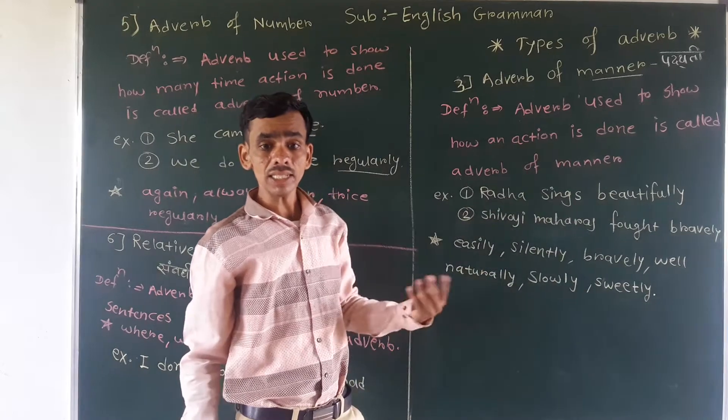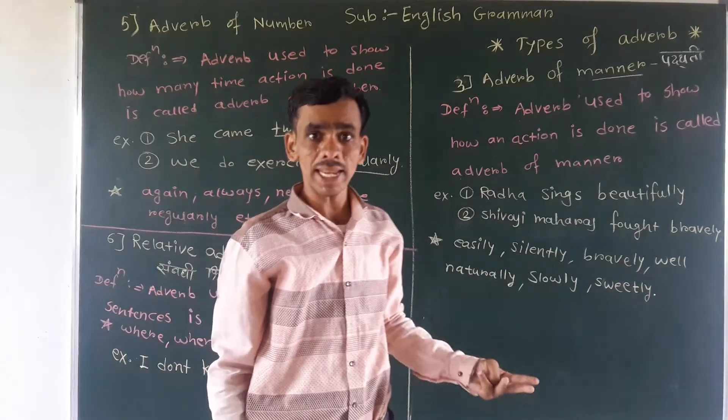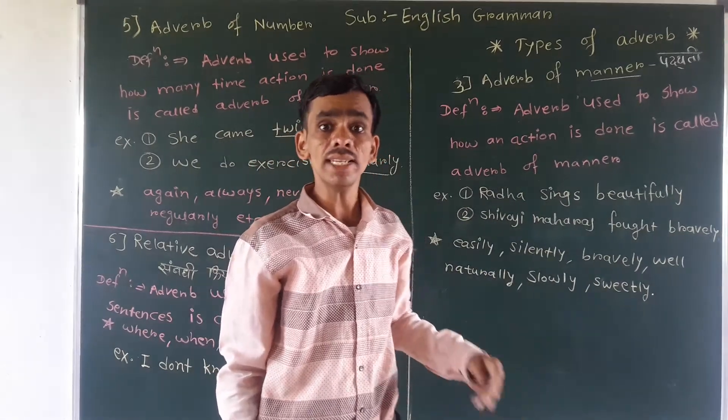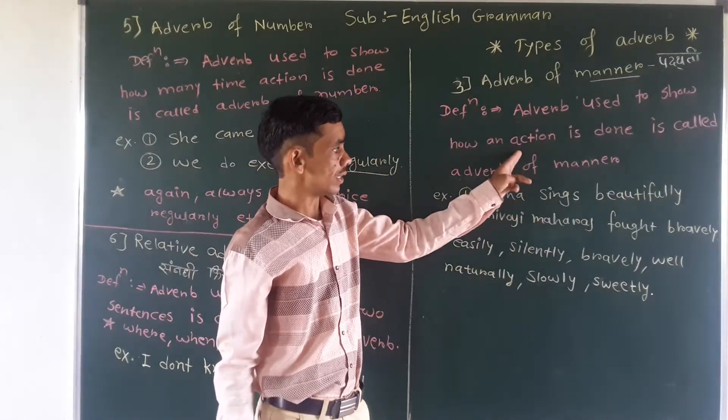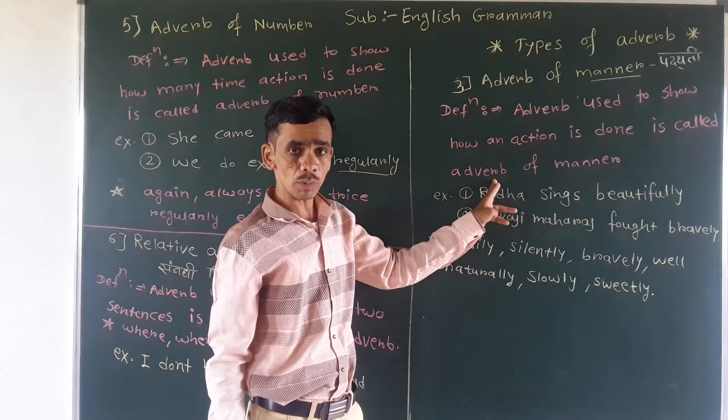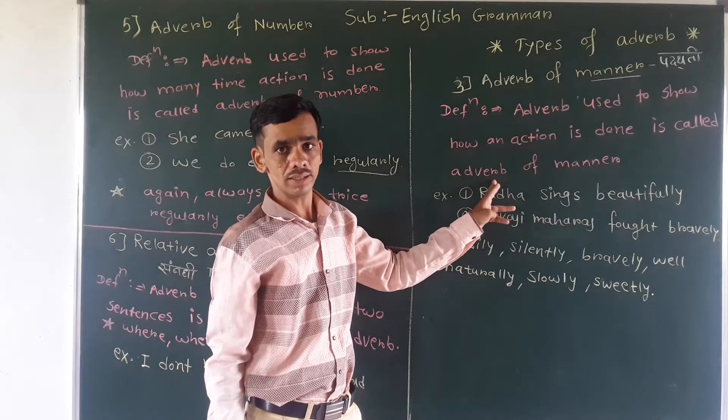Adverb used to show how an action is done. It means the action — jo word ki action hai — wo kaise hori. How action is done? It's called adverb of manner.